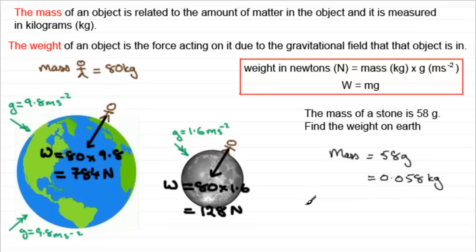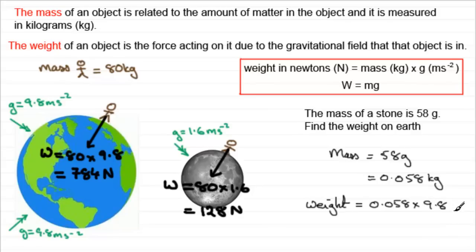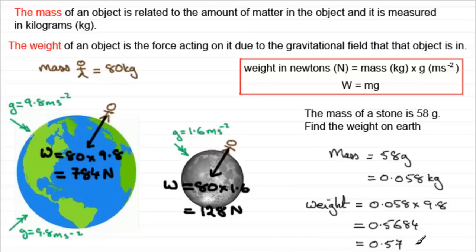So when it comes to the weight, the weight is going to be equal to that mass, 0.058, multiplied by the acceleration due to gravity, which would be 9.8. Always check in questions what value of g they're using — it can vary sometimes. Some authors or examiners might change this to 10, so just take care, but 9.8 tends to be the norm. If you work this out, you end up with 0.5684, and rounding that to two significant figures, that's going to be 0.57 newtons.